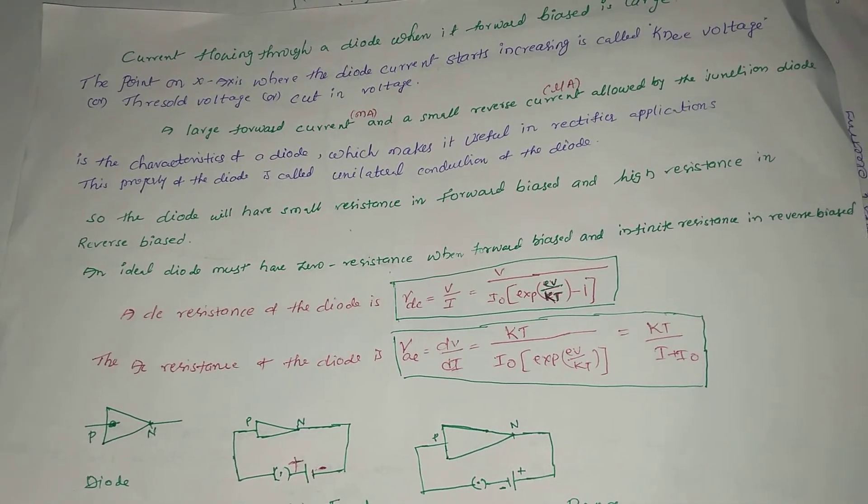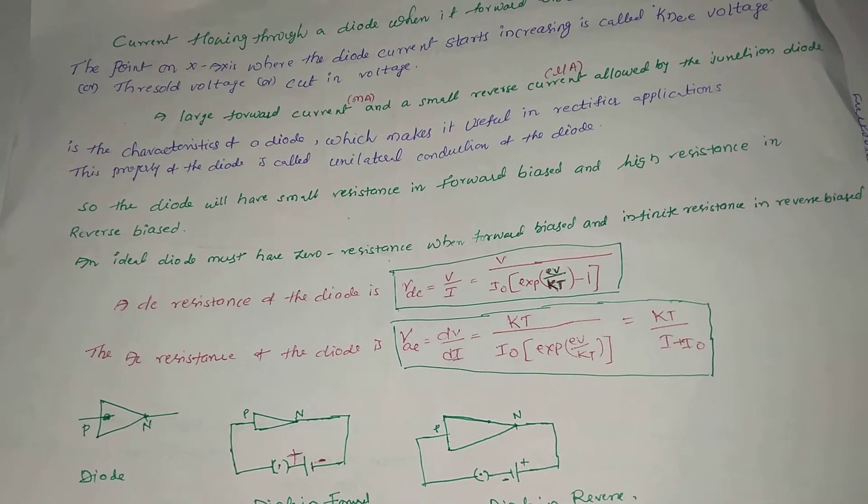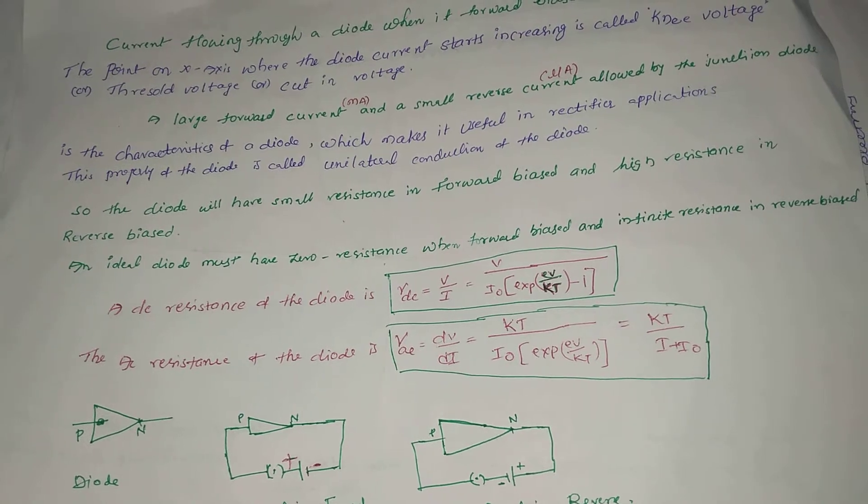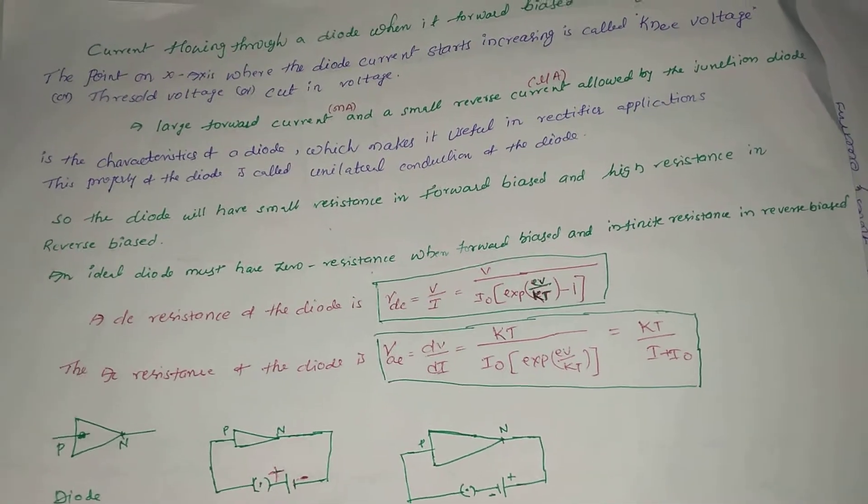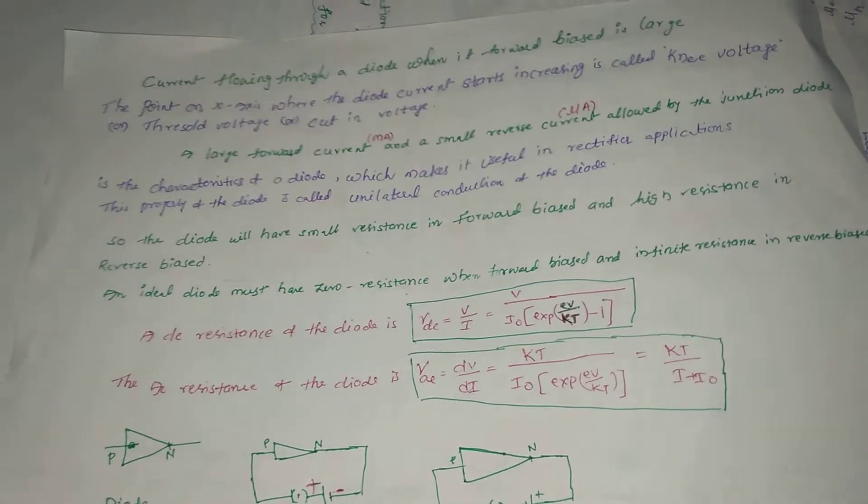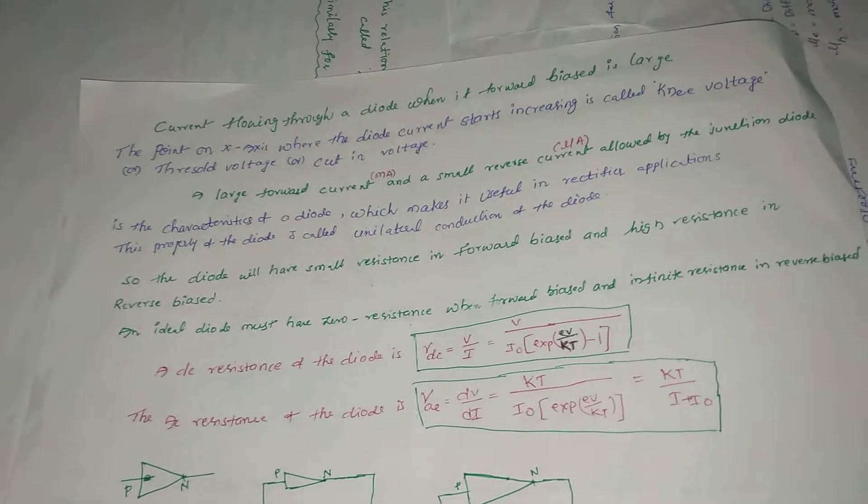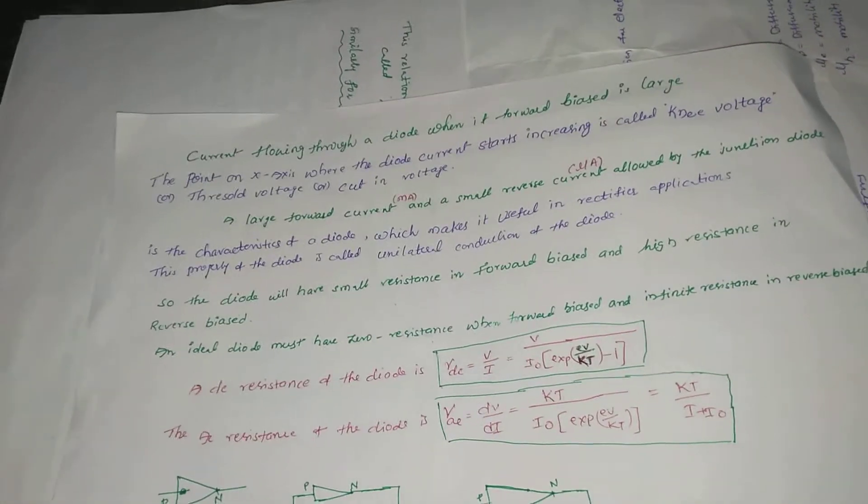Similarly, the actual dynamic resistance of the diode is R_AC = dV/dI = KT/(I_0 * exp(AV/KT)) which equals KT/(I + I_0) where I is current.